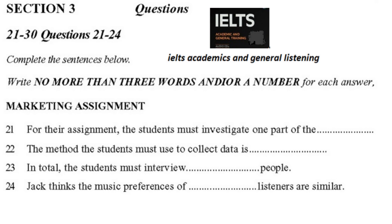Lucy, we really need to get working on this marketing assignment — we've only got five weeks left to the end of term to design it, carry it out and then write up the results. Sure, well let's get started. What exactly do we have to do? Well, it says here we have to look at one area of the entertainment industry. There's a list of different types: music, cinema, theater, sport and eating out. So we choose one branch of the industry and look at how two different groups of people use it. Yes.